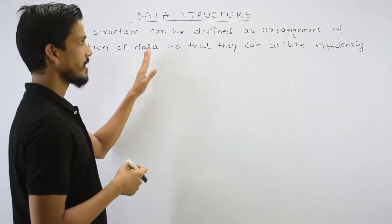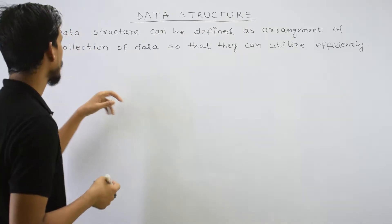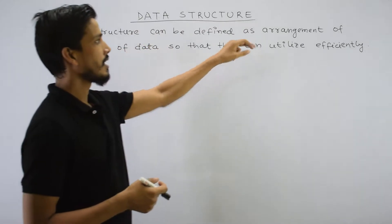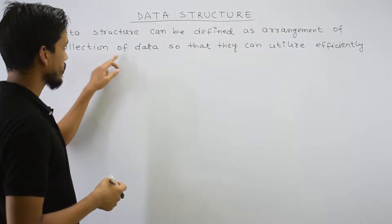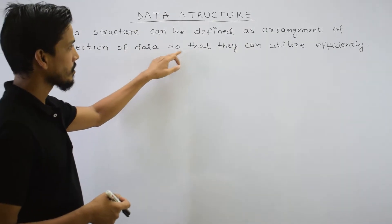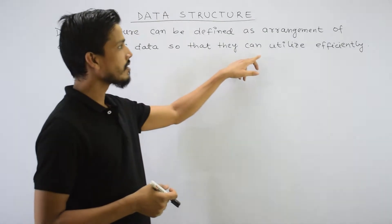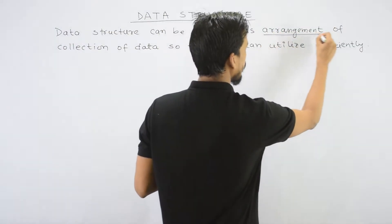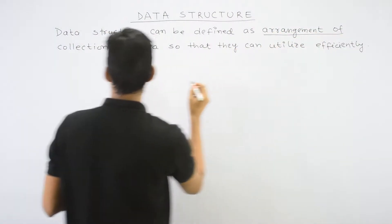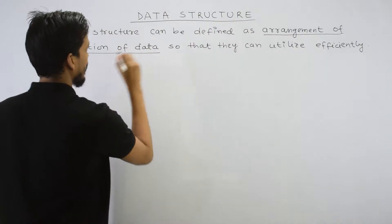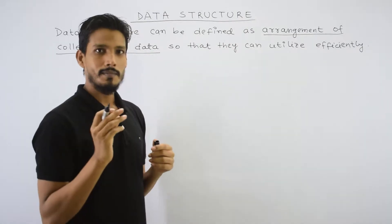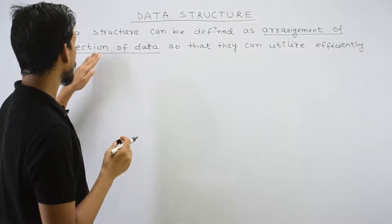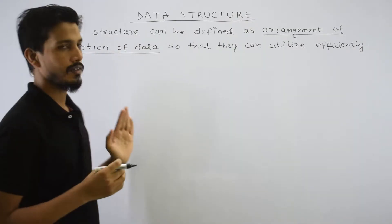This is the definition of data structure. Data structure can be defined as an arrangement of collection of data, so that they can be utilized efficiently. The important point is: arrangement of collection of data. What is the data structure? Arrangement of data — arrangement of collection of data.